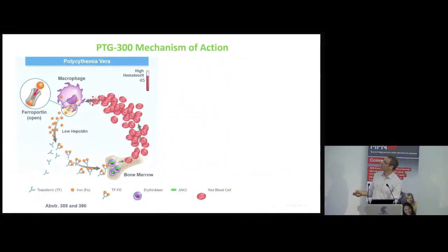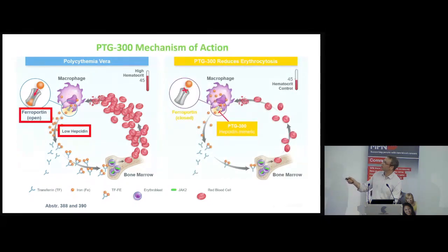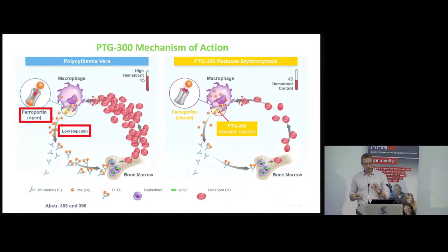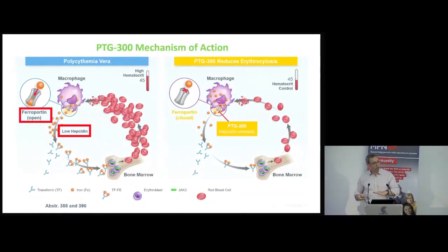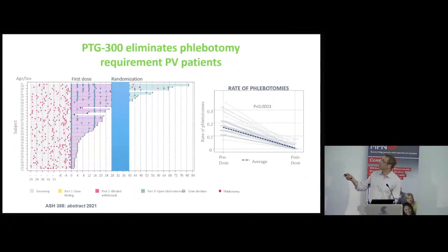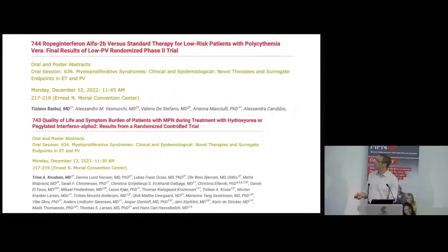There's also an interesting new treatment — a hepcidin analog. Hepcidin is a really important control mechanism for iron in the body, and iron is absolutely essential for red blood cell production. If you interfere with the hepcidin cycle, you can interfere with red blood cell production. The study tested whether this hepcidin analog can calm down excessive red blood cell production in patients with polycythemia vera, and the answer looks pretty interesting — it may help prevent the need for venesections in patients with PV.